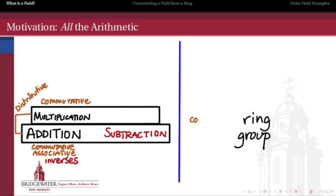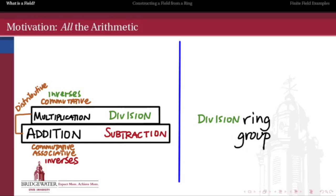If we insist that multiplication also be commutative, then we have a commutative ring — as we have, for instance, in the integers. But if we also want multiplicative inverses — that is, we want to be able to divide by every non-zero element — then we have a division ring. And if we include the commutativity hypothesis as well, we get something better than a division ring: we get a field.